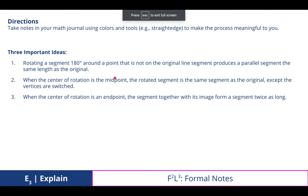All right, so these are your formal notes for today. Very straightforward. Three important ideas behind rotating a segment. Rotating 180 degrees around a point that is not on the original line produces a parallel segment, the same length as the original. Again, it preserves the same size.